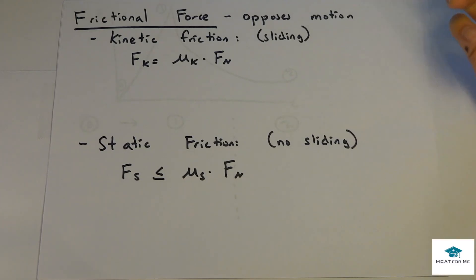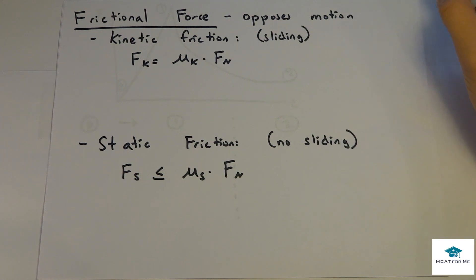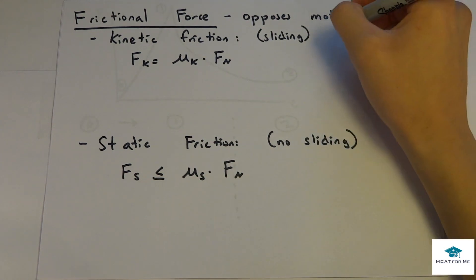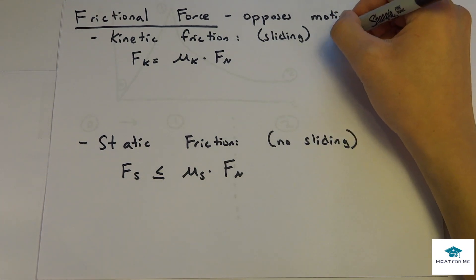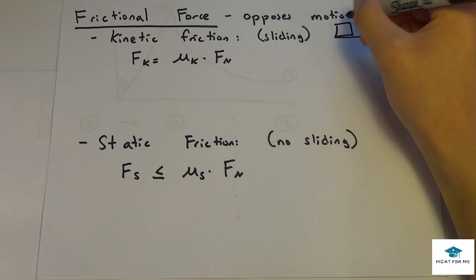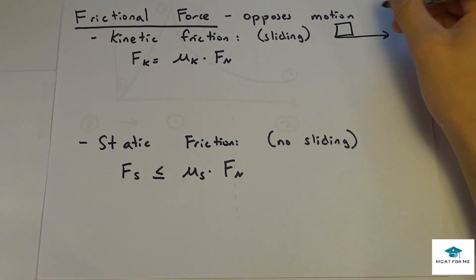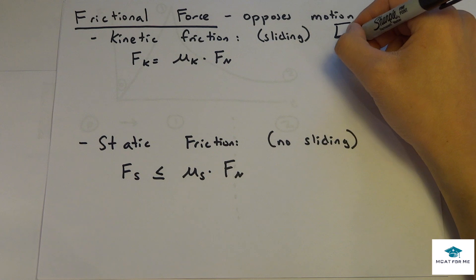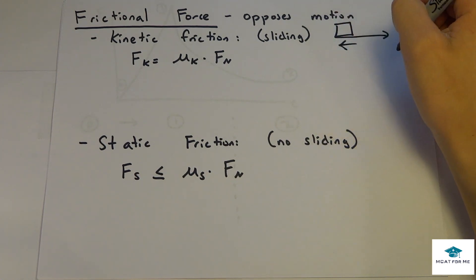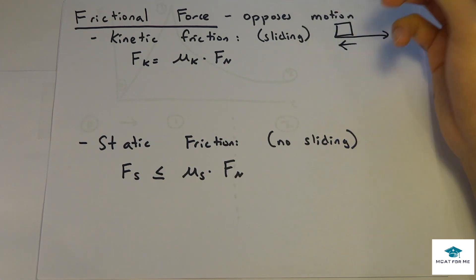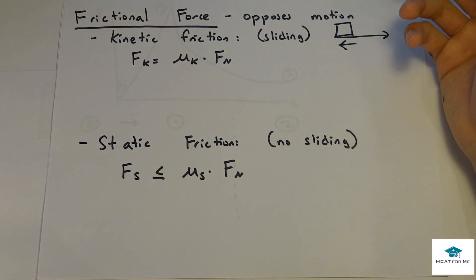Today we're going to be looking at two different types of frictional force. Frictional force always opposes motion. So if we have a box that is sliding to the right, friction is always going to be to the left. You'll never have friction going in the same direction as motion — it's just not possible.